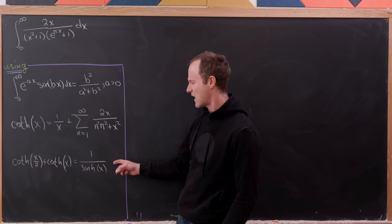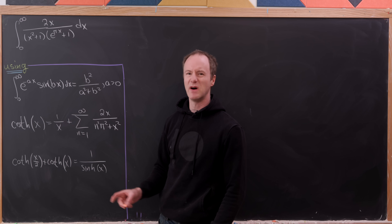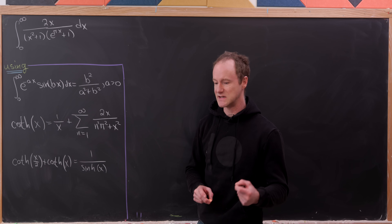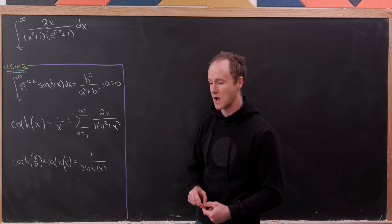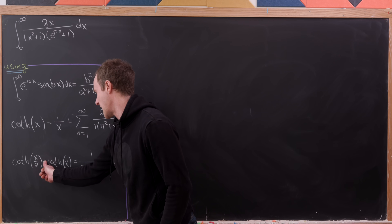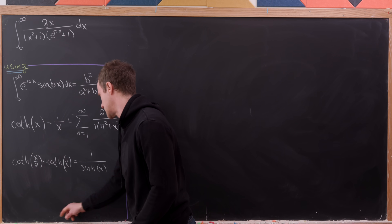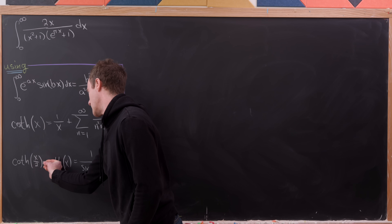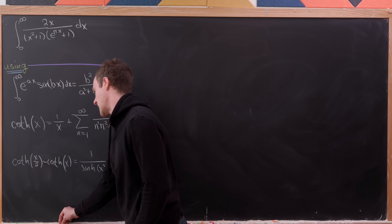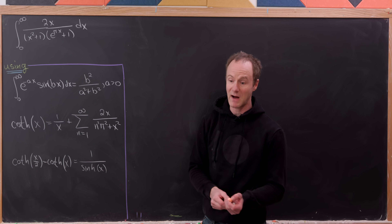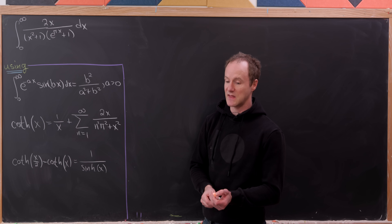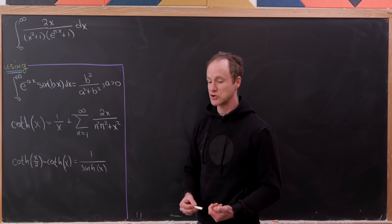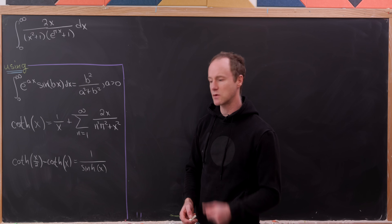Finally, a third identity — not derived here but fairly easy to verify from definitions — is that coth(x/2) minus coth(x) equals 1 over sinh(x).